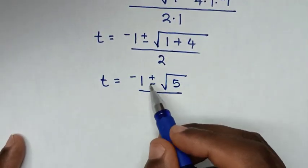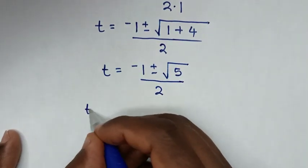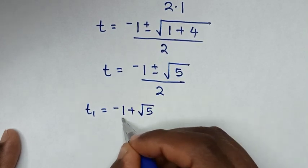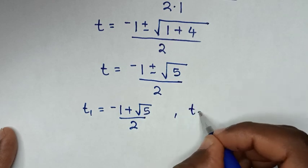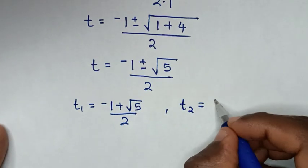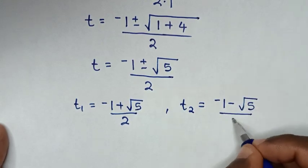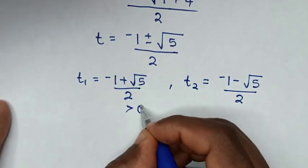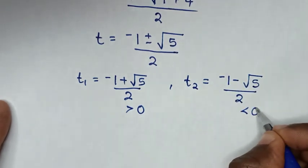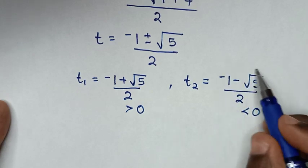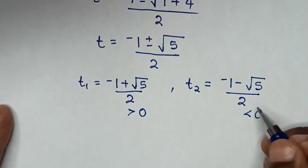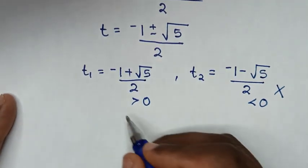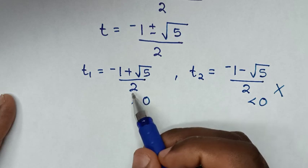From here we have two solutions due to the plus or minus. The first value of t is negative 1 plus square root of 5 over 2, and the second value is negative 1 minus square root of 5 over 2. The first value is greater than 0 and the second is less than 0. The negative value will not satisfy the original equation, so the second value of t is rejected and we continue with the first value.